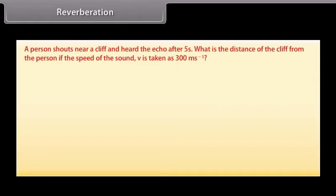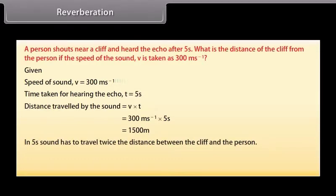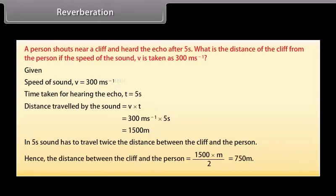Let's now solve a problem. A person shouts near a cliff and hears the echo after 5 seconds. What is the distance of the cliff from the person if the speed of the sound v is taken as 300 meters per second? Given that the speed of sound v is 300 meters per second, time taken for hearing the echo t is 5 seconds. Distance travelled by the sound is equal to v into t, which is equal to 300 meters per second into 5 seconds is 1500 meters. In five seconds, sound has to travel twice the distance between the cliff and the person. Hence the distance between the cliff and the person is 1500 meters by 2, that is 750 meters.